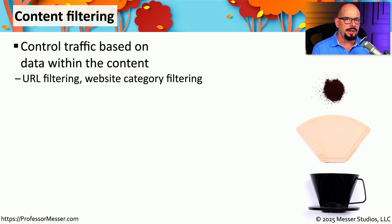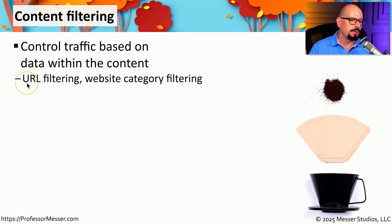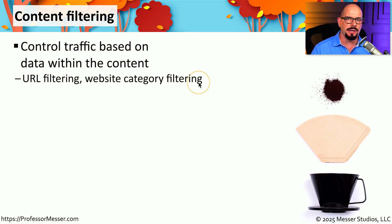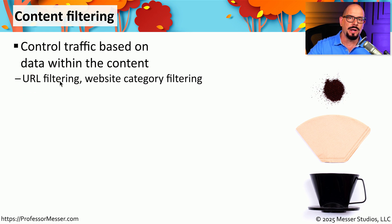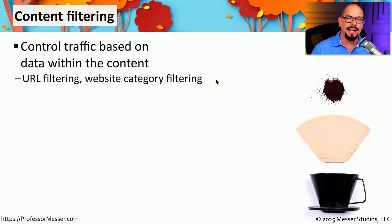Content filtering is a very good way to restrict what people can see in their browser. This is usually filtering information based on a specific URL or based on a broad category of URLs that you might visit. For example, your content filtering might target a single URL pointing to a well-known gambling site, or you could set a broad website category that denies all access to any website categorized as gambling.